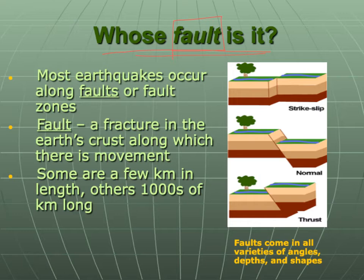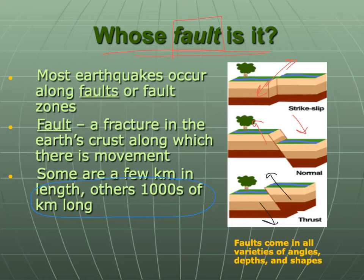Most earthquakes occur along faults or fault zones. Some earthquakes occur as magma pushes up through cracks, but we can have strike-slip faults, normal faults where the hanging wall goes down relative to the foot wall, and reverse faults — sometimes called thrust faults — where the hanging wall goes up relative to the foot wall. Some faults are just a few kilometers in length, while others are thousands of kilometers long, like the San Andreas, where the entire contact of the Pacific Plate and North American Plate is a giant transform strike-slip fault.